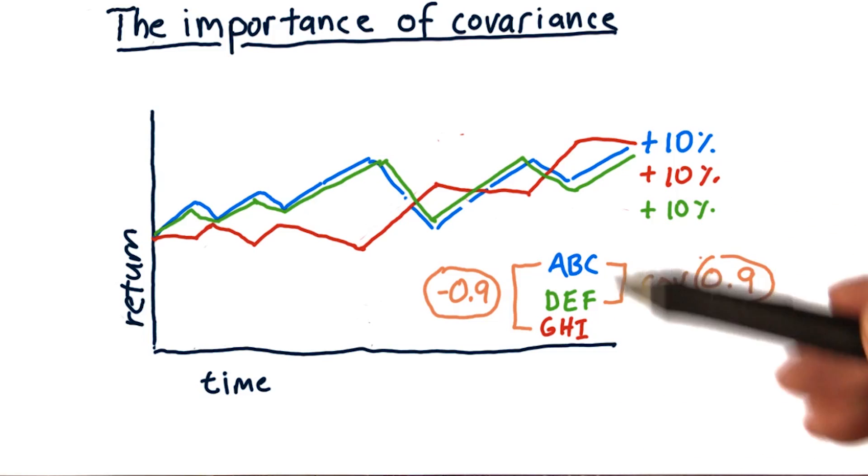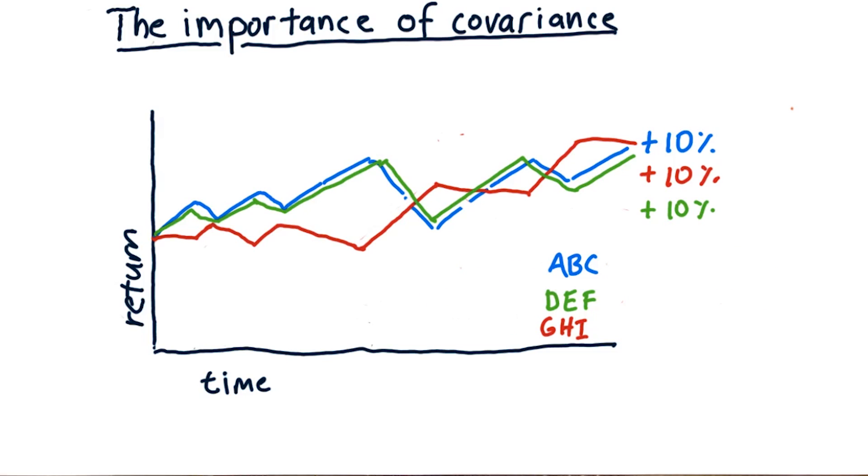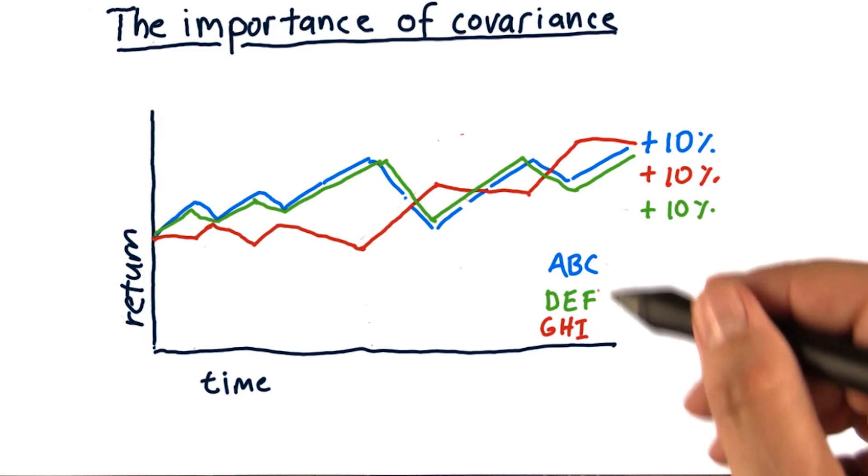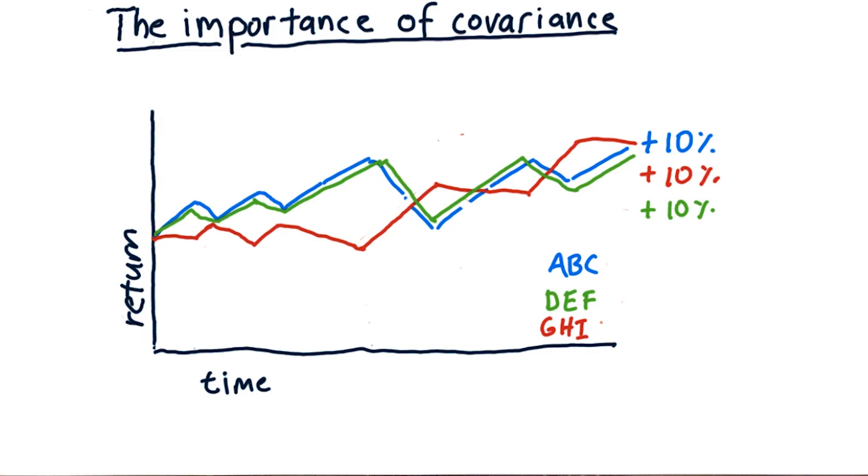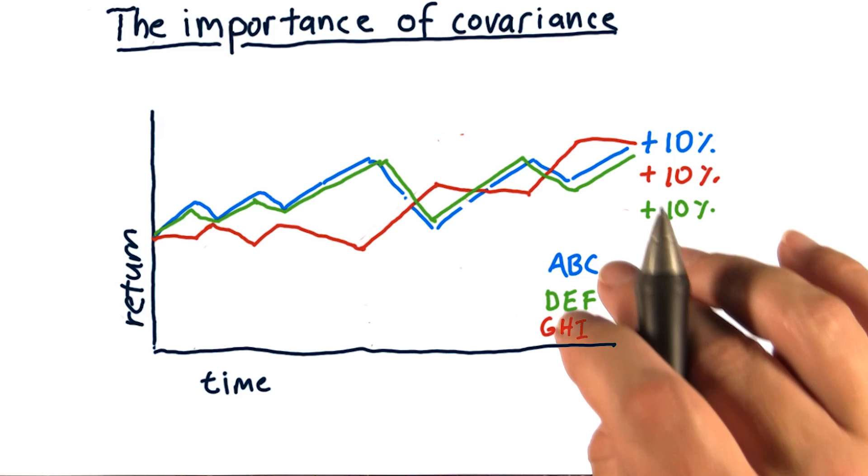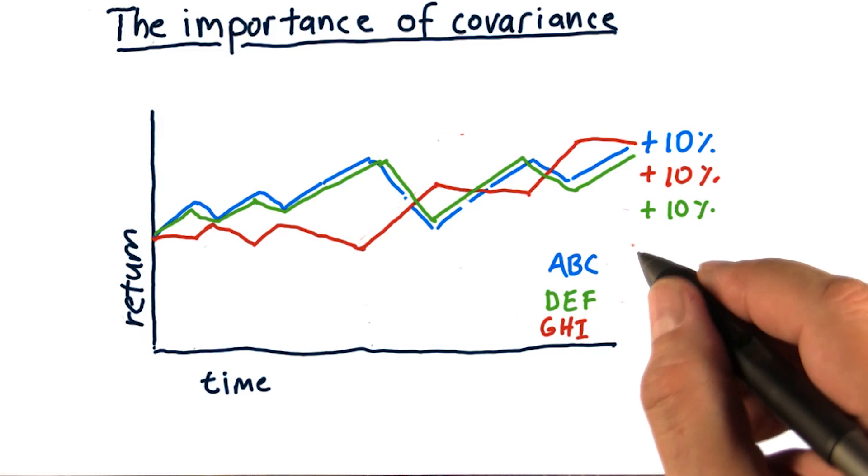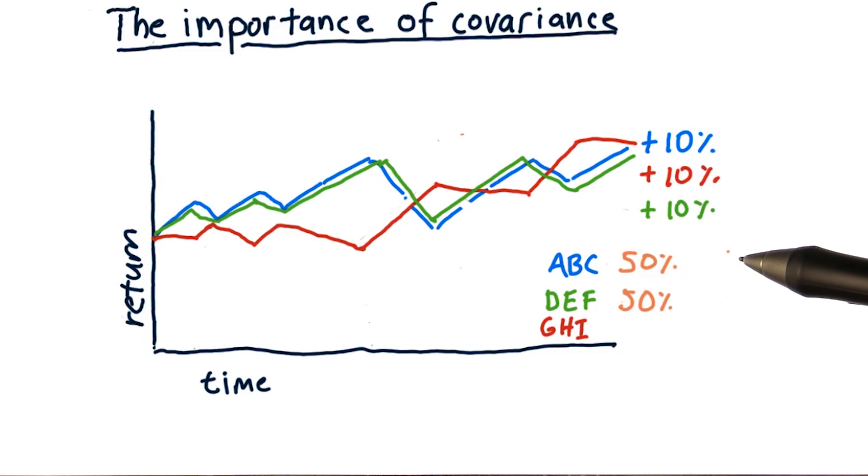What's the best way to blend these together? Let's consider a couple of different portfolios, which are just weightings on these different assets. Let's look first at one that is 50% ABC and 50% DEF. What's that one going to look like?